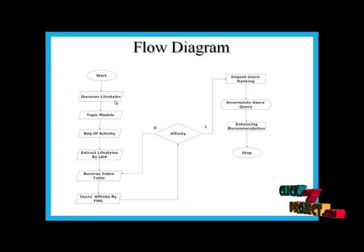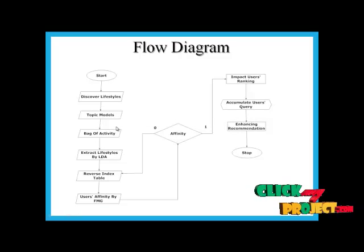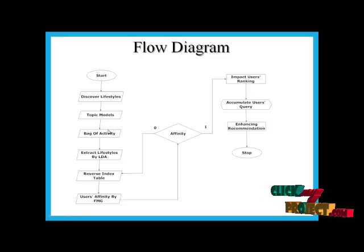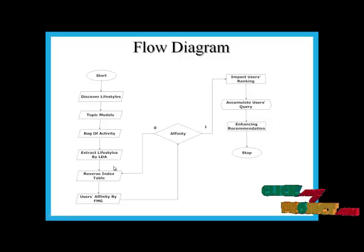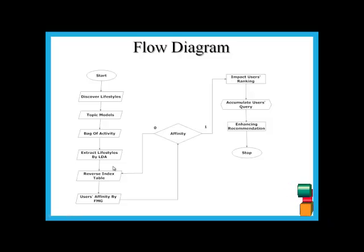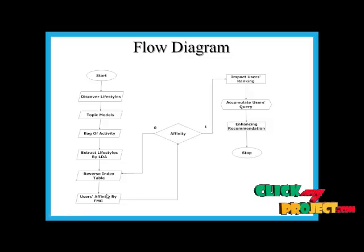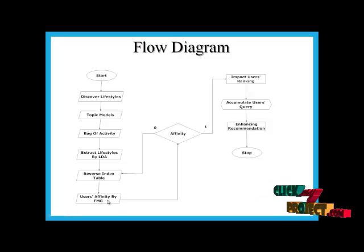Initially, the system discovers the lifestyles and profile data of users, then prepares a live document based on their lifestyles and profile data. The lifestyles are extracted from the user using the Latent Dirichlet Allocation algorithm. The sensor data are stored in the database in the form of lifestyles and users. Then user similarities are found using the friend matching graph.